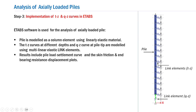Here is the ETABS model used for the analysis. It essentially consists of three components. First is the pile, which is modeled as a column element using linear elastic material. Second, we have used multilinear elastic link elements in order to model the TZ curves, and the link elements are modeled at every 1 meter level. Third is the link element representing the QZ curve, which is provided at the pile tip. The ETABS model is very simple and will take only about 10 to 15 minutes for modeling, and the analysis will provide us the pile settlement curve and the skin friction and end bearing resistance displacement plots.